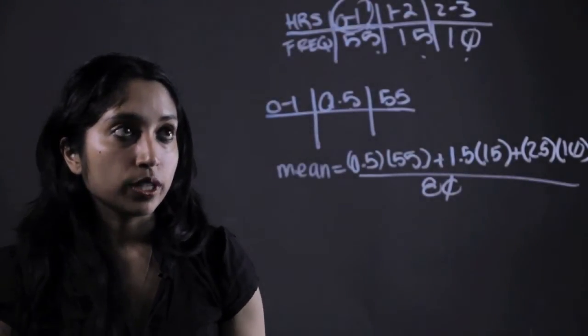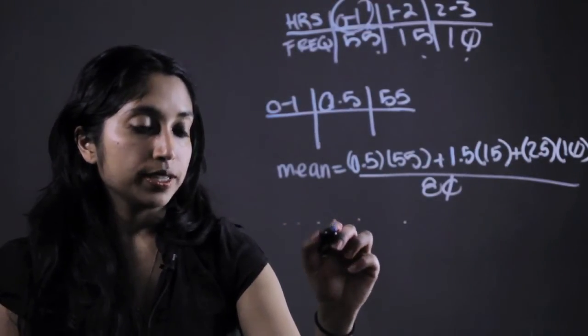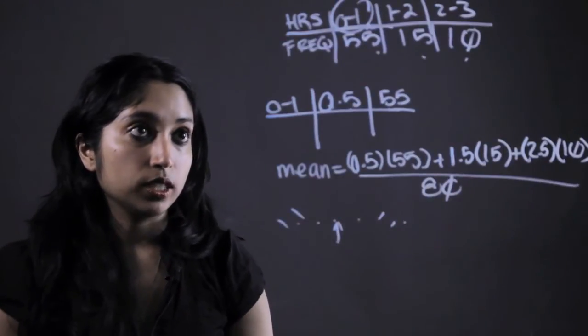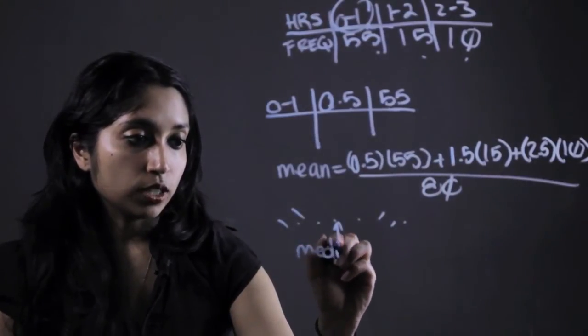Now the median is just the number that occurs in the middle. Like if you were to line up all of our numbers from smallest to largest and take the one that is in the exact middle, cross them out, that is what our median is. Now instead of writing out 80 numbers, we can just think about it logically.